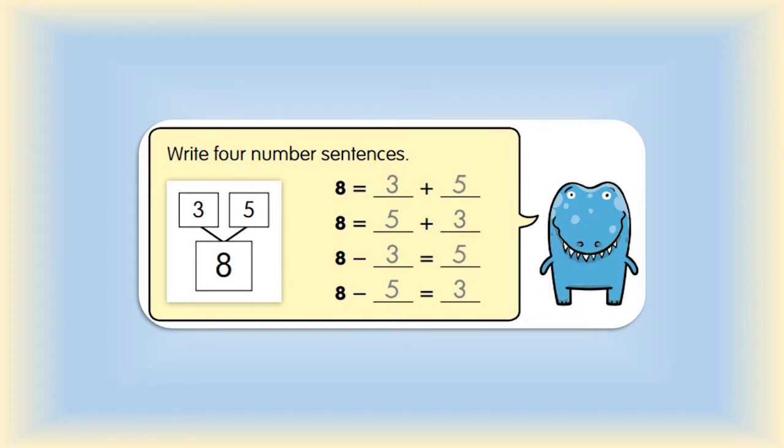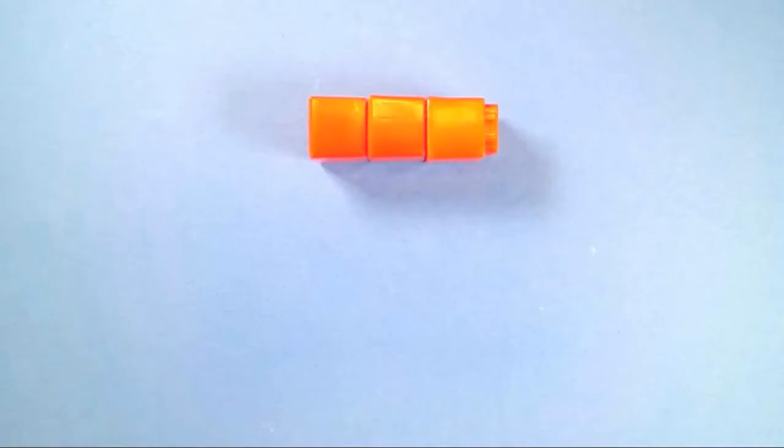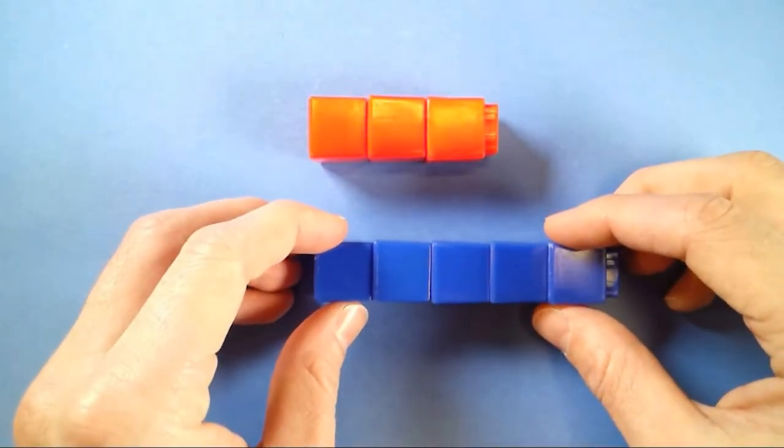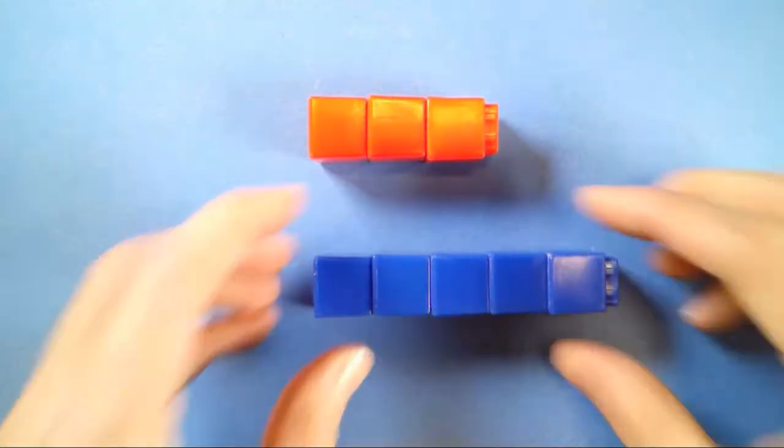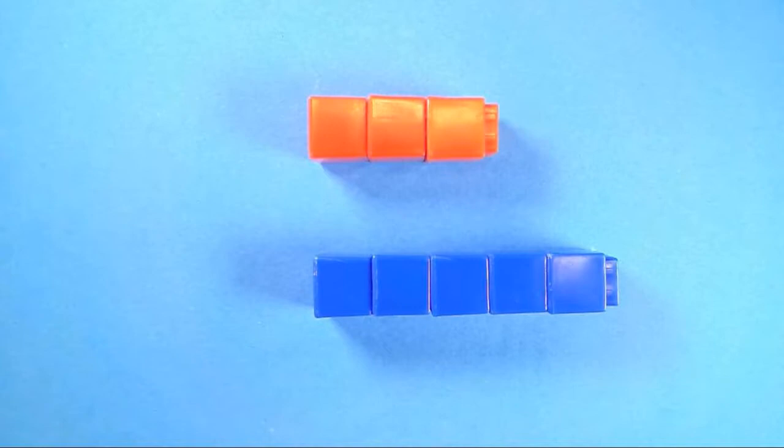Let's take a look at these number sentences by using your connecting cubes. Begin by building a bar of 3 connecting cubes of one color. I will be using red for my first bar. Then, build a bar of 5 connecting cubes of another color. I will use blue for the second bar. You may be wondering why a bar of 3 and a bar of 5. Take a look at Dino's number bond. Here you can see 3 and 5 are part of his number bond. Now, let's take a look at those 4 number sentences again and use the connecting cubes to act them out.